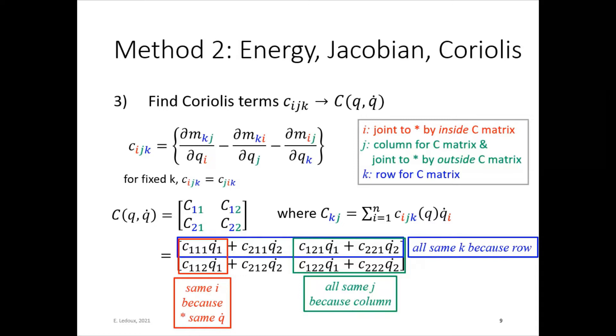Later video will show an example of how to apply this. So in that case, it should come out to be a little bit more clear. But if you just follow the formula, you can find the entries for every element. And remember that for a fixed k, so for the same row, C_{ijk} = C_{jik}. So for that, here the C_{211} would be the same as C_{121}.